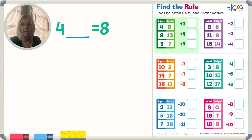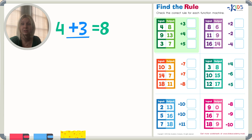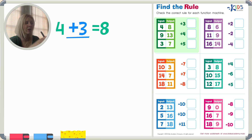You might already know the answer, but let's go through and see what makes sense. Let's start with the top number. 4 plus 3 equals 8? Let's count on: 5, 6, 7. Is that right? No, that one's not right, is it? So I know that's not the correct answer. Let's try again.